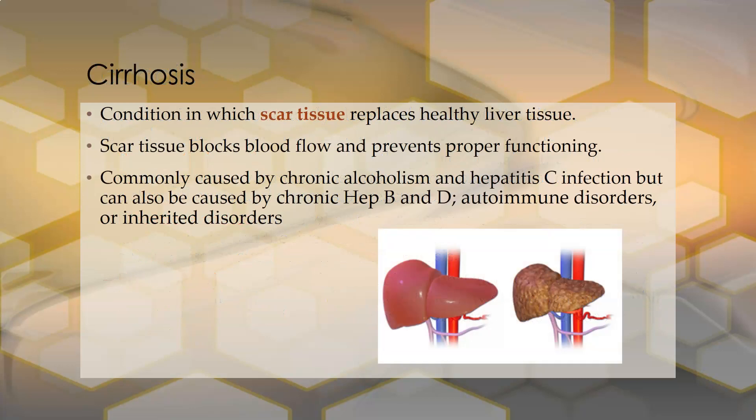Cirrhosis is a condition in which scar tissue replaces healthy liver tissue. Scar tissue cannot detoxify or carry out liver functions, and it also blocks blood flow, generally preventing the proper functioning of the liver. It is commonly caused by chronic alcoholism and chronic hepatitis C infections, but can also be caused by chronic hepatitis B, hepatitis D, autoimmune disorders, or inherited disorders.